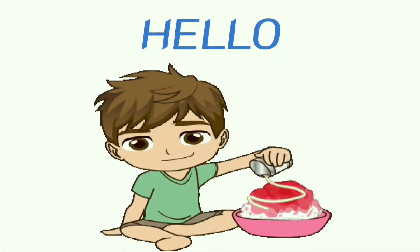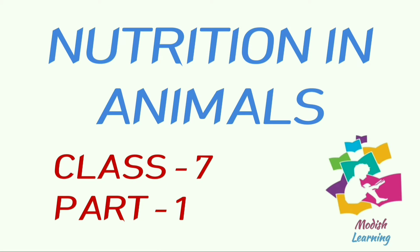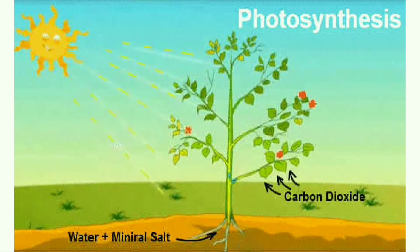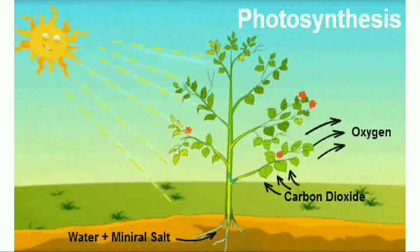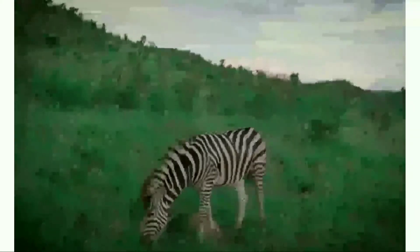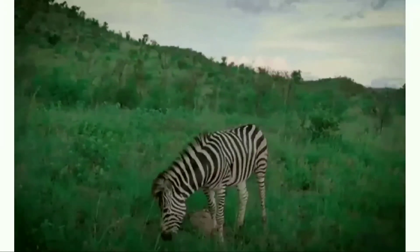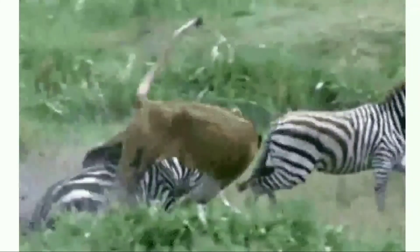Hello everyone, hope you all are doing well. In this video we will learn the second topic of Class 7th science: nutrition in animals. You know that plants can prepare their own food by the process of photosynthesis, but animals cannot. Animals get their food directly from plants or indirectly by eating animals that eat plants.